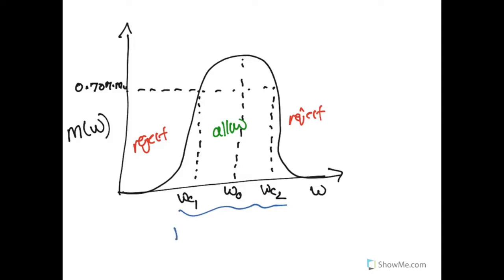The bandwidth for these filters is the difference between the two corner frequencies. So how much frequencies are allowed between the two points of the band region.